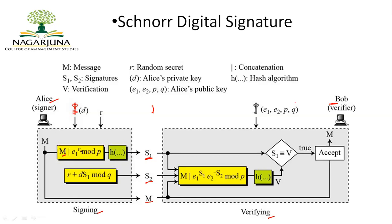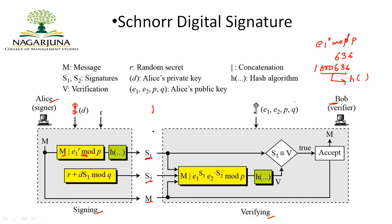The message is concatenated with e1^r mod p, where r is a random secret integer. For example, assume e1^r mod p gives 636. This is concatenated with the message — say Alice sends message 1000 — giving the concatenated value, which is then passed to a hash function h to produce the message digest s1.